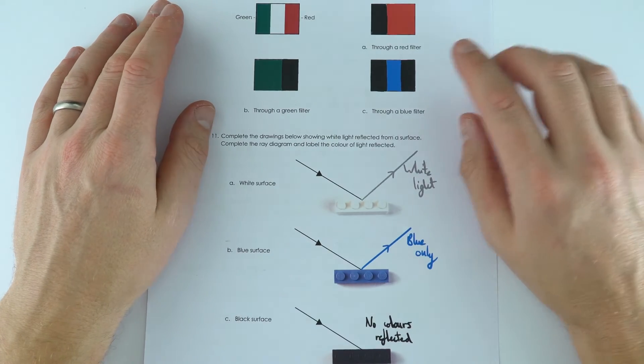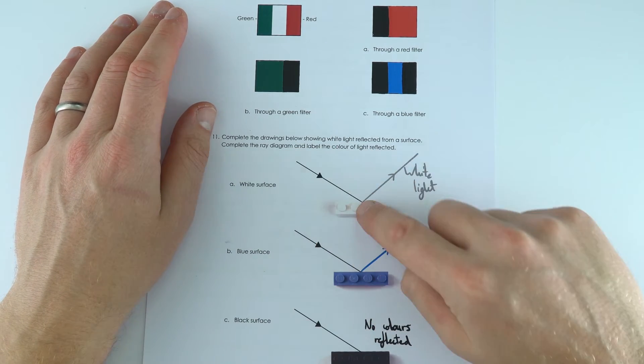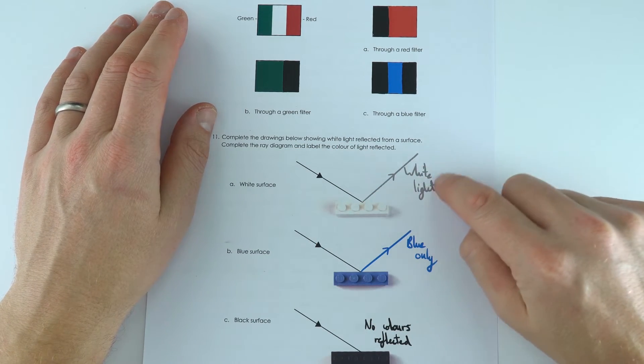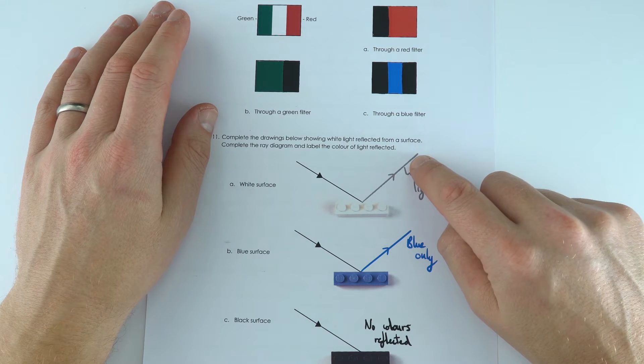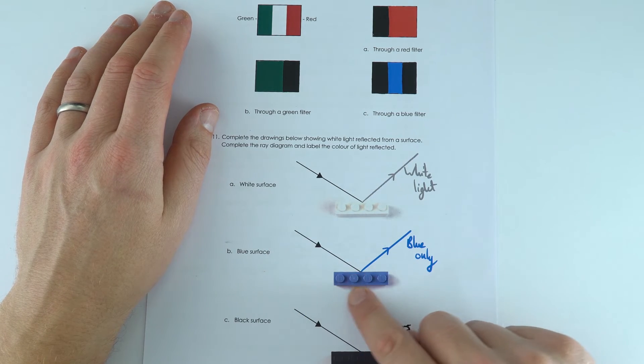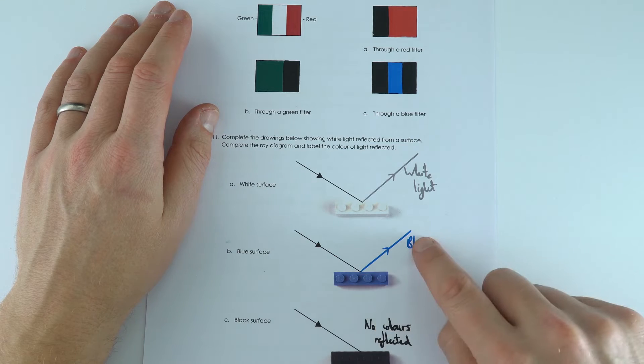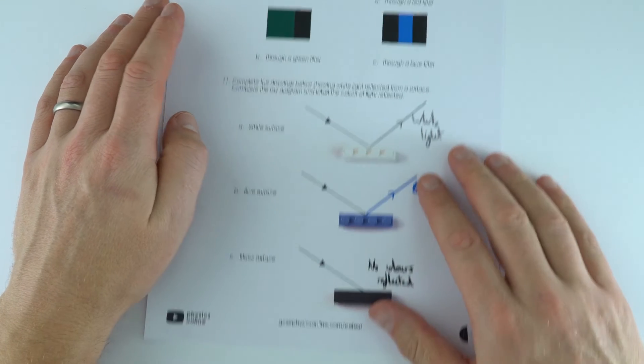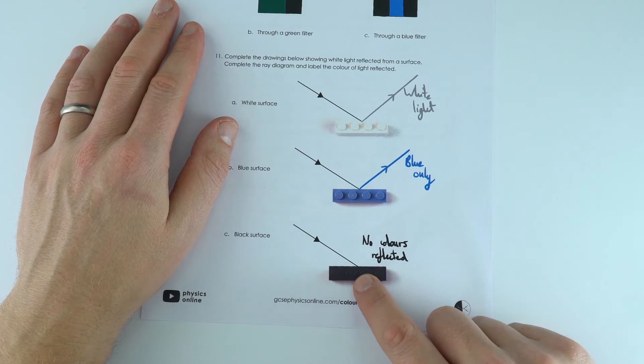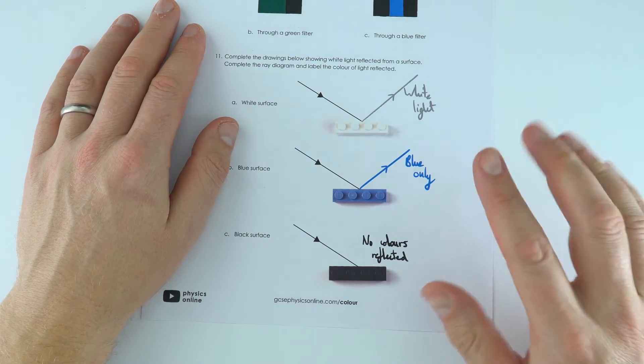And again looking at surfaces: a white surface would reflect all the colours of light so we see white light being reflected here. A blue surface will absorb all of the colours of light apart from blue which is reflected, and a black surface absorbs all the colours of light and therefore no colours are reflected.